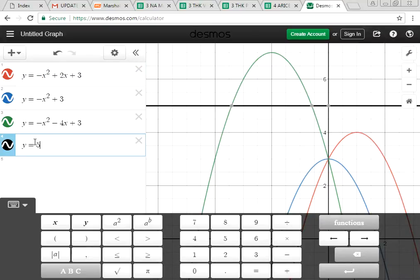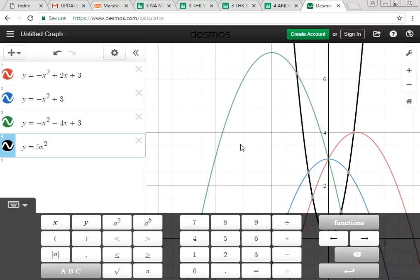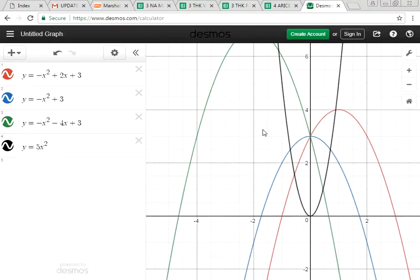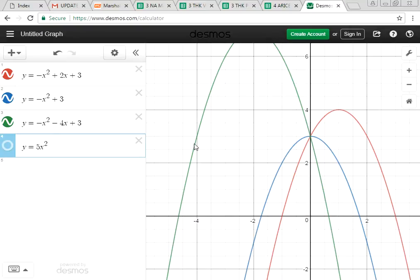This negative number in front of the x square tells you whether it opens downwards or upwards. Let me show you one example. Y equals to 5x square. The coefficient is a positive number, and because it is positive, I get a parabola opening upwards.